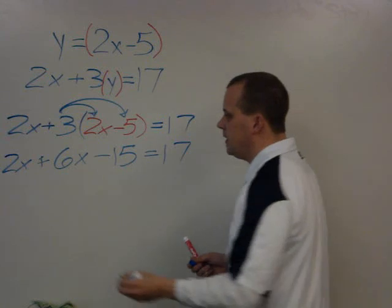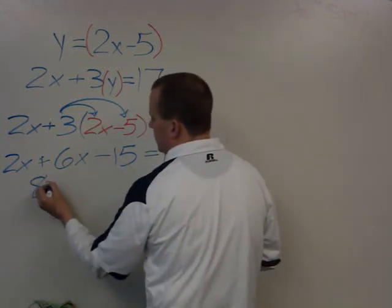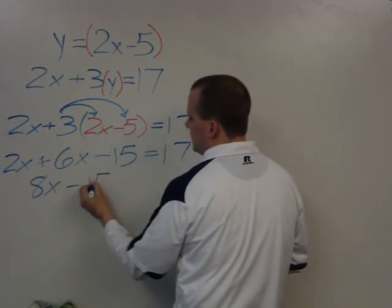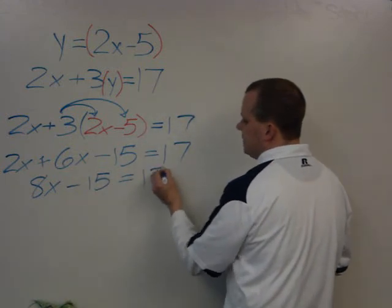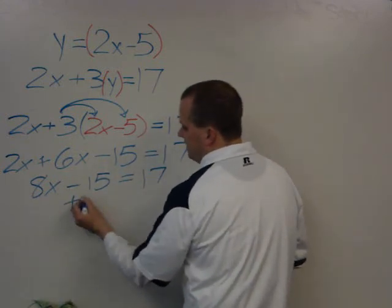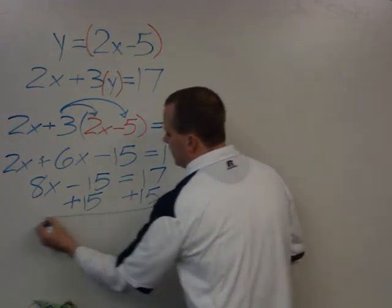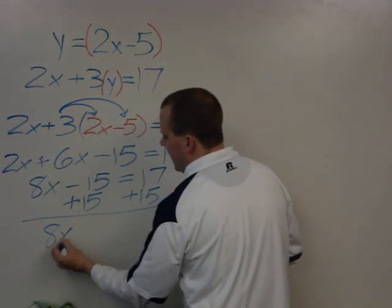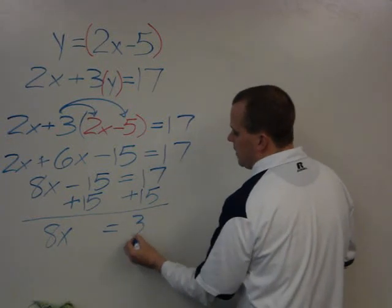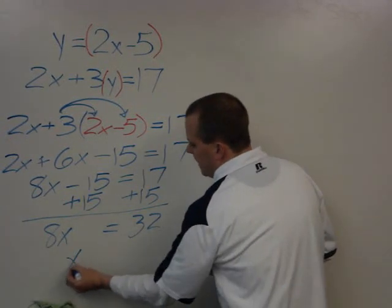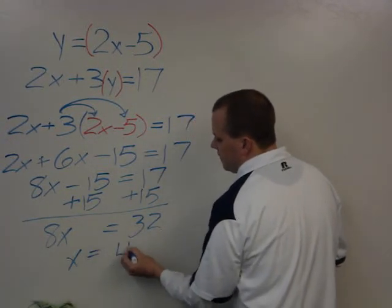Now I need to combine like terms. 2x plus 6x is 8x minus 15 equals 17. I'm going to add 15 to both sides. I'm going to add 15 over here as well. I'm left with this: 8x is equal to 32 and x equals 4.